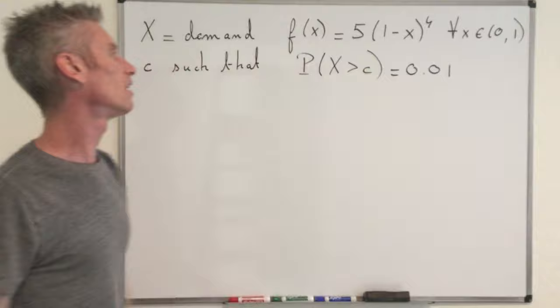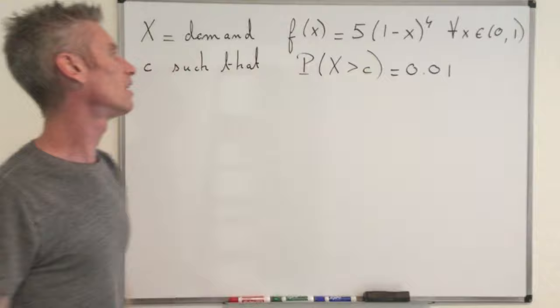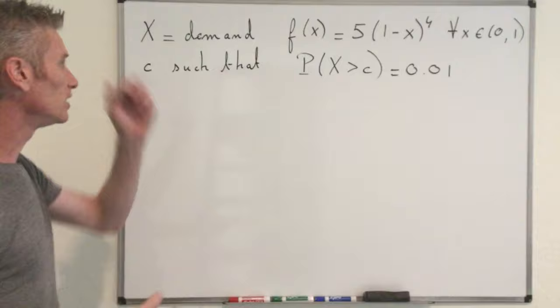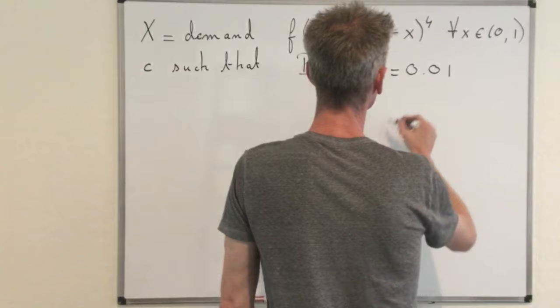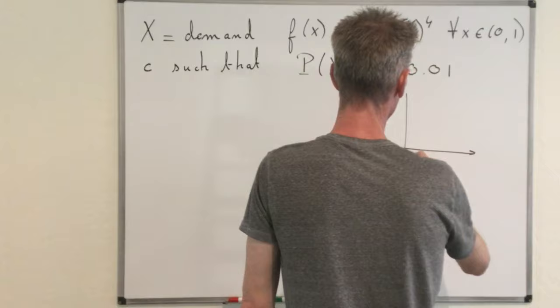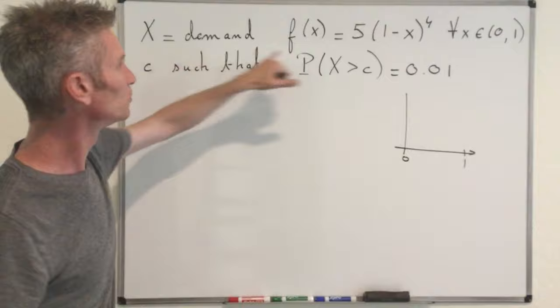So now we are done rewriting all the English into equations. And now that's just some basic calculations. So I can also draw a picture to show you what's going on. So basically you are here, let's say 0.01. That corresponds to the demand.